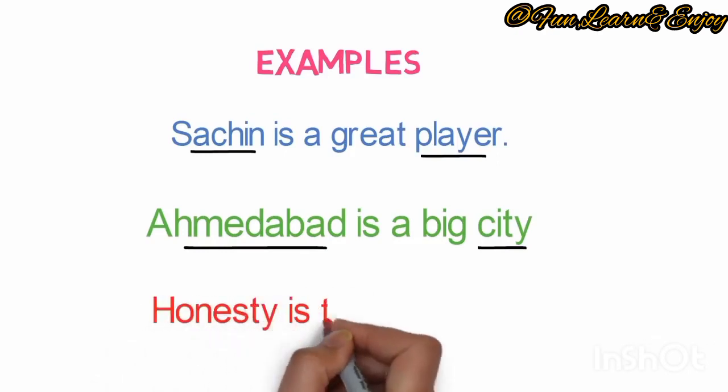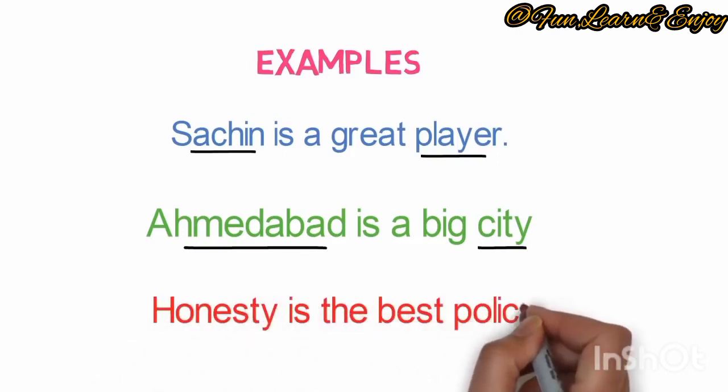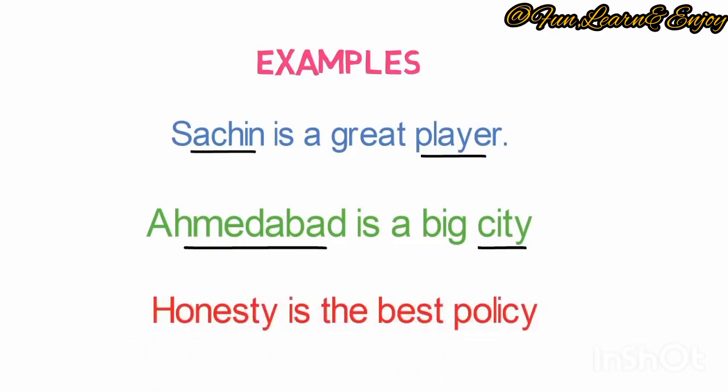Honesty is the best policy. Here, honesty and policy both come in the category of idea. So they are nouns.